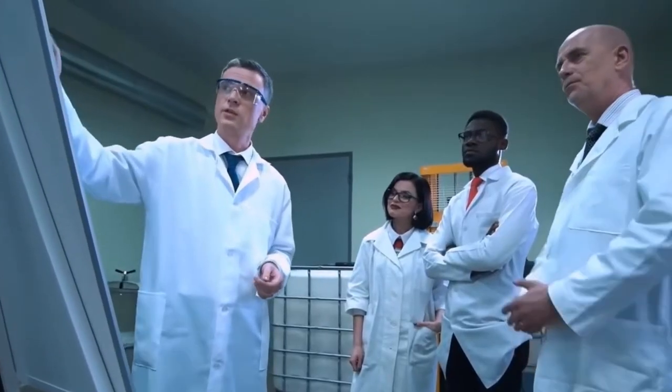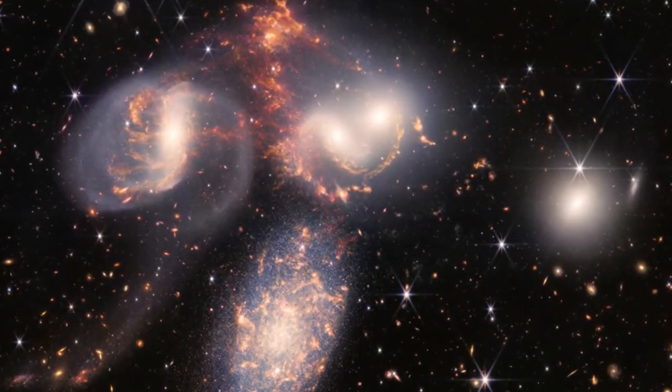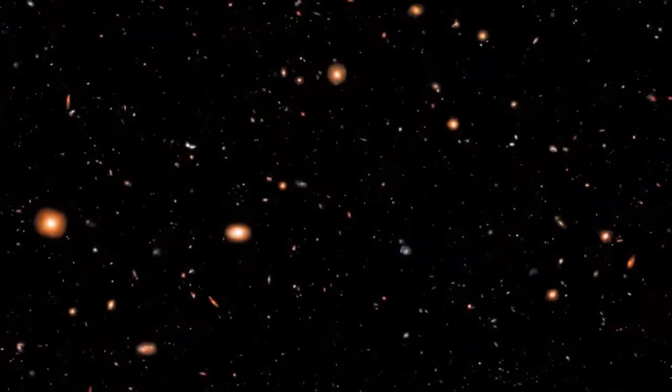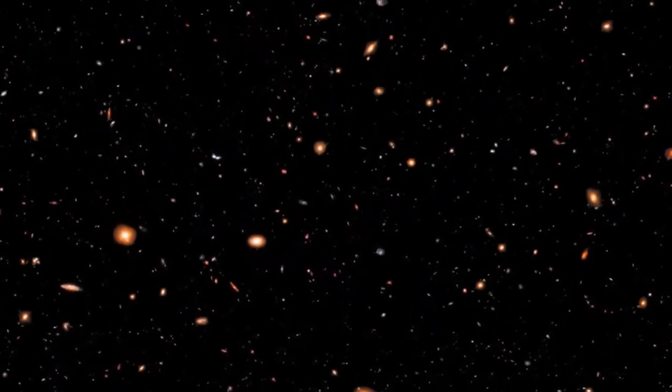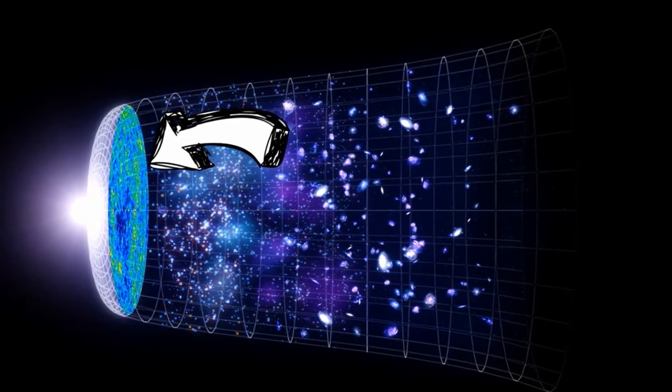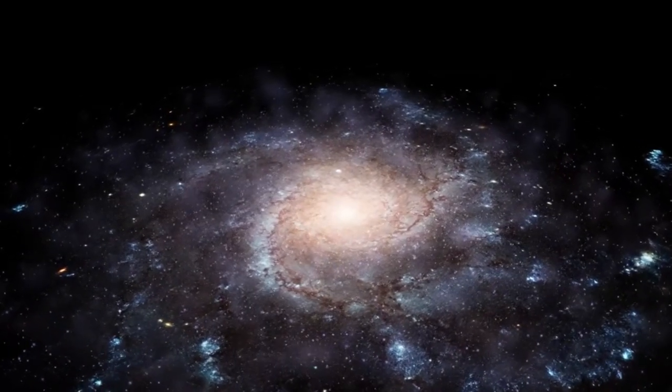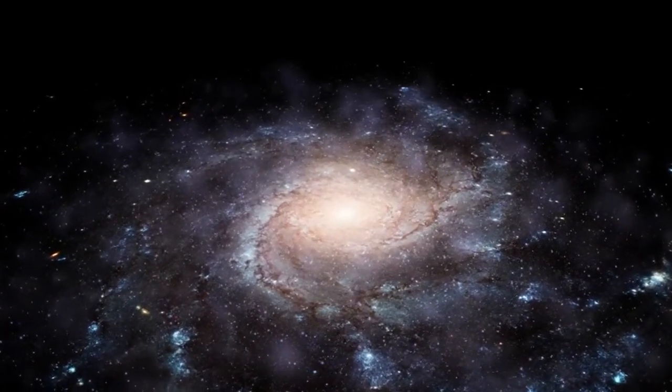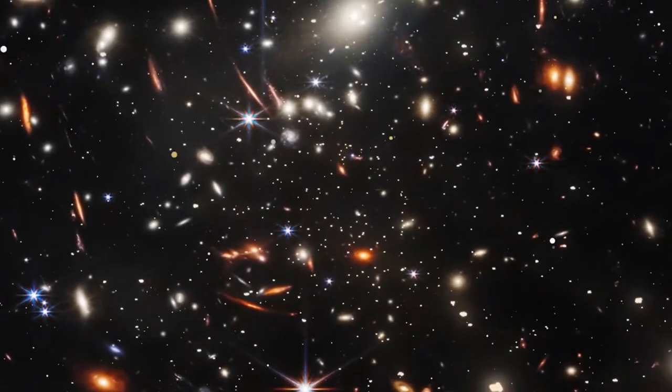There is also the possibility that the survey report is true and that our oldest galaxies have better form and are larger than our current theory proposes. But even if these reports are true, it still has no means of disproving the Big Bang theory. Rather, it means a modification of how matter assembled in the early universe to form galaxies. It is a tweak and still far from debunking the Big Bang entirely.